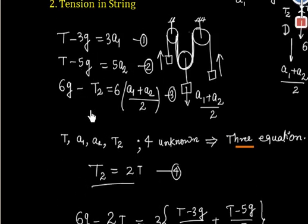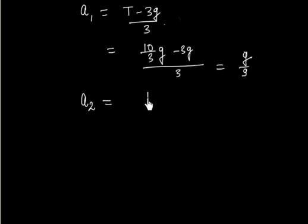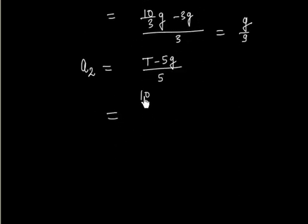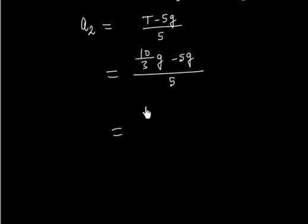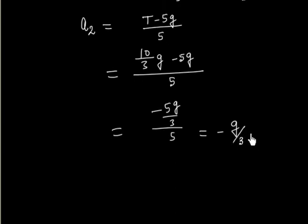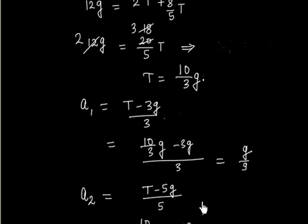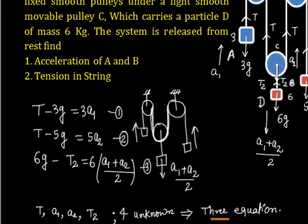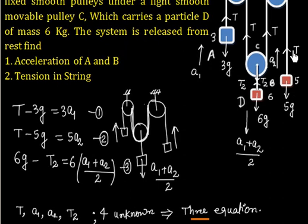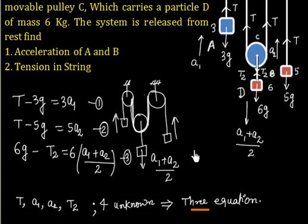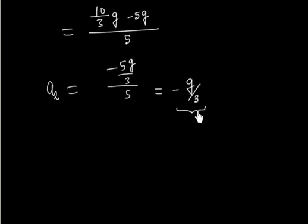Now finding A2: A2 = (T − 5g)/5 = ((10/3)g − 5g)/5 = (−5g/3)/5 = −g/3. The negative value for A2 means our assumption that B moves upward was incorrect — mass B is actually moving downward with acceleration g/3.